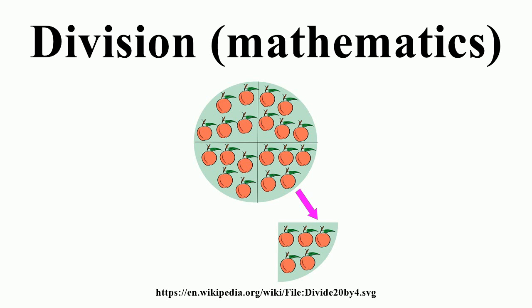This definition ensures that division is the inverse operation of multiplication. Of real numbers. Division of two real numbers results in another real number when the divisor is not zero. It is defined such that a/b = c if and only if a = c×b and b≠0.